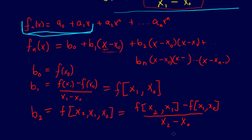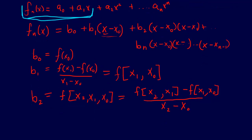So that's how it works for B2, and then it goes on in general. In general, BN equals F[x_N, x_{N-1}, ..., x1, x-naught].